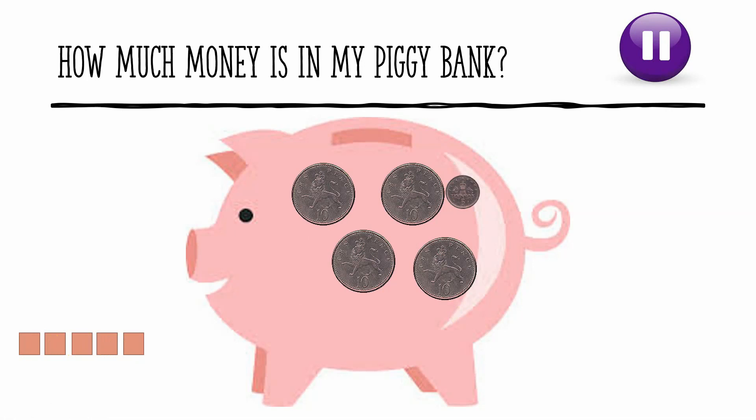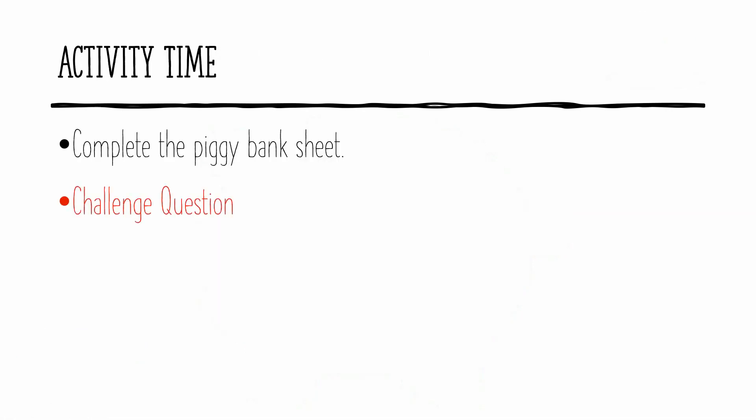Well done everybody, that was super learning. It's activity time now. I would like you to complete the piggy bank sheet attached to this post. There are two versions: an easier version labelled green, and a tricky version for anybody who found today's learning super easy and would like a challenge, labelled red. There is also a challenge question attached. I hope you have fun, and remember to draw out any squares or circles to help you with counting if you get stuck. Bye bye.